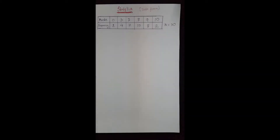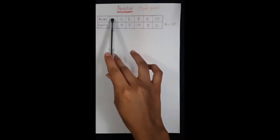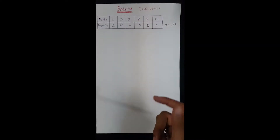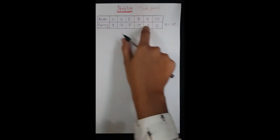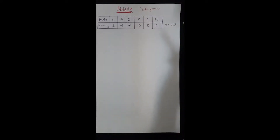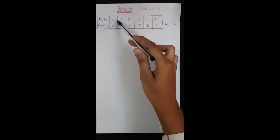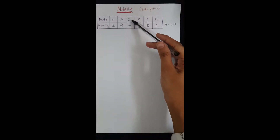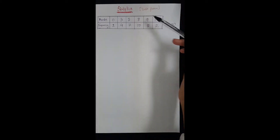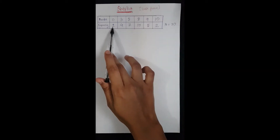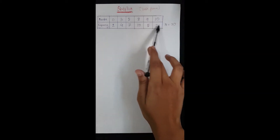The previous examples included only raw data, but whenever there are a huge number of data, the numbers are usually arranged using a table in an organized way. For example, the first row represents the marks scored by the students and the second row represents the number of students scoring each individual mark. So two students scored zero, seven students scored five, five students scored nine.